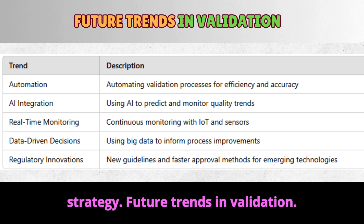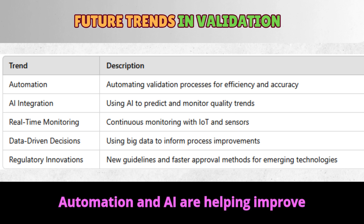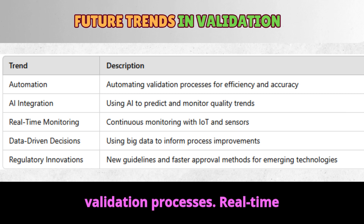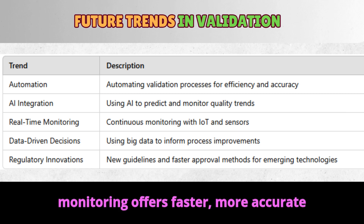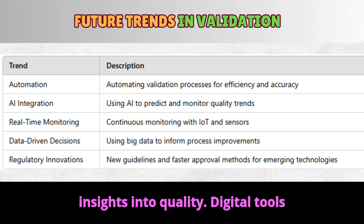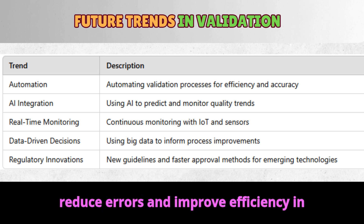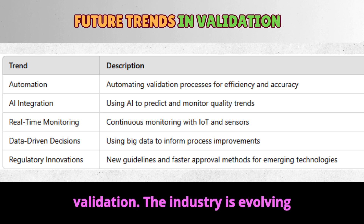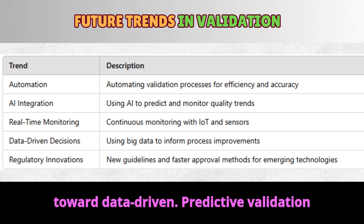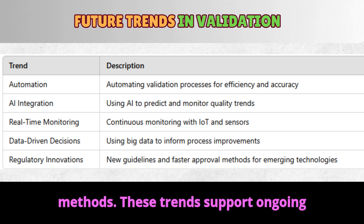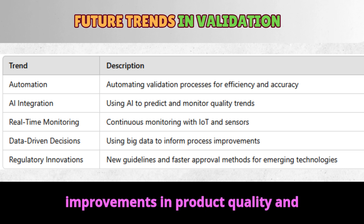Future trends in validation. Automation and AI are helping improve validation processes. Real-time monitoring offers faster, more accurate insights into quality. Digital tools reduce errors and improve efficiency in validation. The industry is evolving toward data-driven, predictive validation methods. These trends support ongoing improvements in product quality and safety.